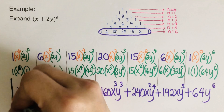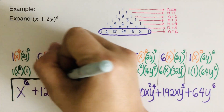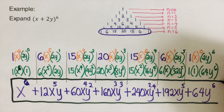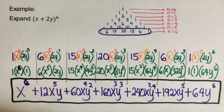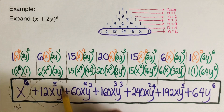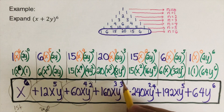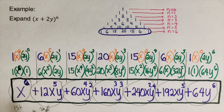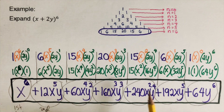So the expanded version of (x + 2y)⁶ using Pascal's triangle is: x⁶ + 12x⁵y + 60x⁴y² + 160x³y³ + 240x²y⁴ + 192xy⁵ + 64y⁶. In this answer, we call each part a term — so we have a 1st, 2nd, 3rd, 4th, 5th, 6th, and 7th term.